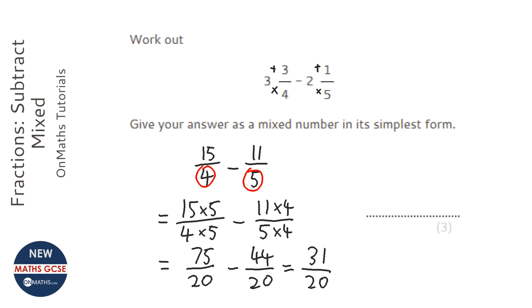Now, what we need to do is work out how many 20s we can take away from 31, which is 1. So 1 whole 1, and then we take away that 20 from the top, and we're left with 11 over 20. So it's 1 and 11 20ths.